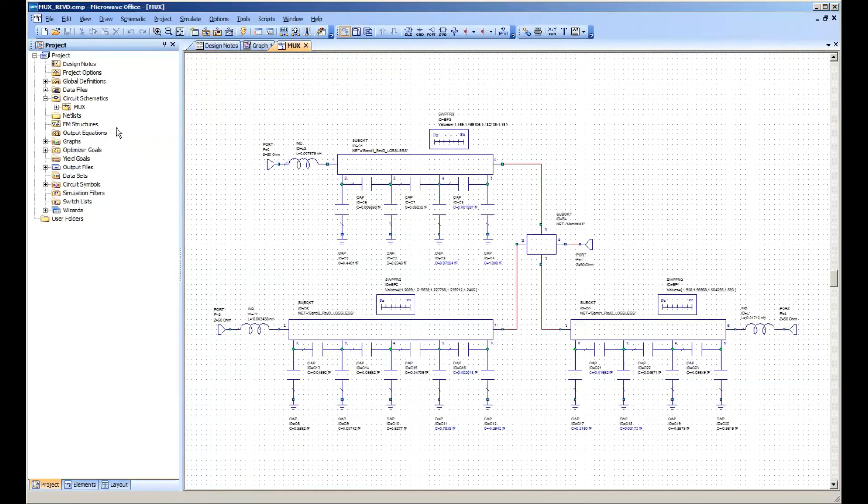So in this case, we're doing a triplexer. It happens to be for the GPS bands. And each one of these S-parameter blocks is from an EM simulation of a cross-coupled comb line filter.